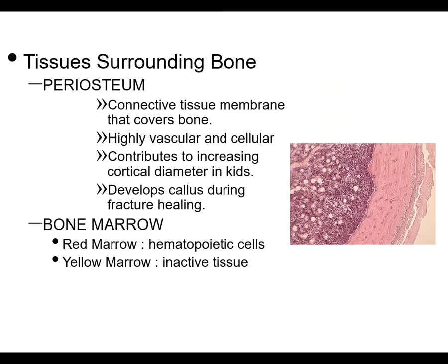Tissues surrounding the bone include, most importantly, the periosteum — a connective tissue membrane that covers the bone. It's highly vascular and cellular. It contributes to increasing cortical diameter in kids, who have a very thick periosteum. This is what allows the so-called greenstick fracture, where you break on only one end and the other end holds because the periosteum is so thick and the bone bends rather than fully breaking — something you don't really see in adults. The periosteum also develops callus during fracture healing and is a good source for the fracture to heal.